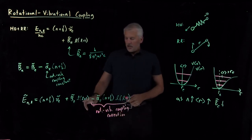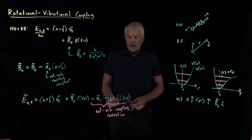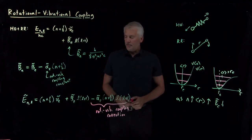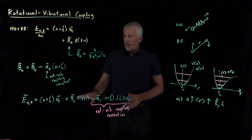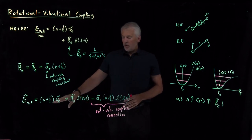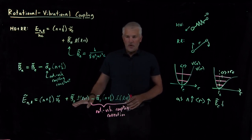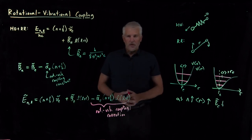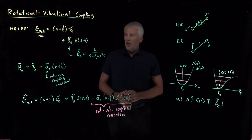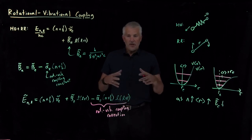This rotational-vibrational coupling correction tells us how much the rotational energy gets reduced because of excited vibrational energy. So far we have included the harmonic oscillator and rigid rotor with this new correction. What we'll do next is combine all these corrections — anharmonicity, centrifugal distortion, and rotational-vibrational coupling — back into one expression.